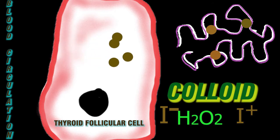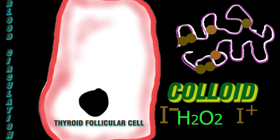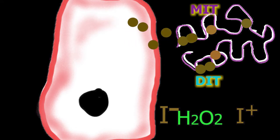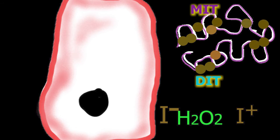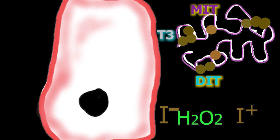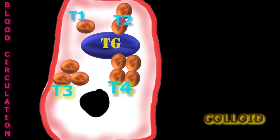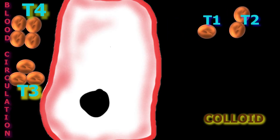Binding of one iodine atom yields monoiodothyrosine (T1), and a second iodination produces diiodothyrosine (T2). The thyroglobulin attached with iodine atoms is stored in the lumen of the thyroid follicle as colloid. In the last step, two diiodothyrosine (T2) molecules join to form T4, and one T1 and one T2 join to form T3. They then diffuse through the plasma membrane into the interstitial fluid and into the blood.